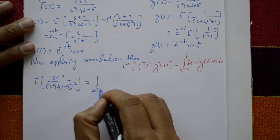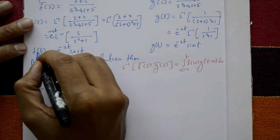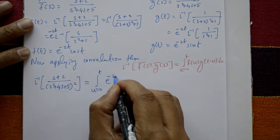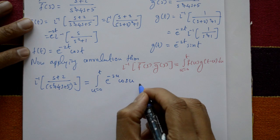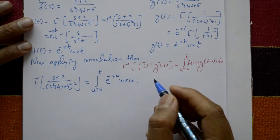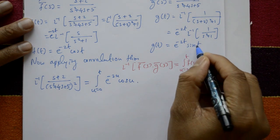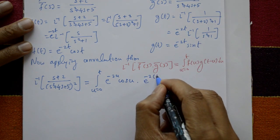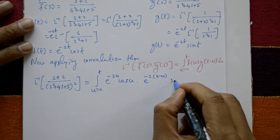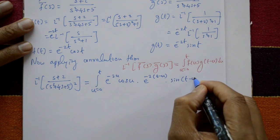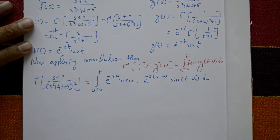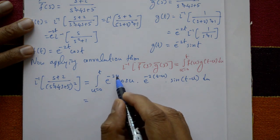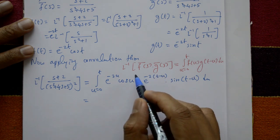Setting up the integral from u = 0 to t: f(u) = e^(−2u) cos(u), and g(t − u) = e^(−2(t−u)) sin(t − u), giving the integral of e^(−2u) cos(u) · e^(−2(t−u)) sin(t − u) du.